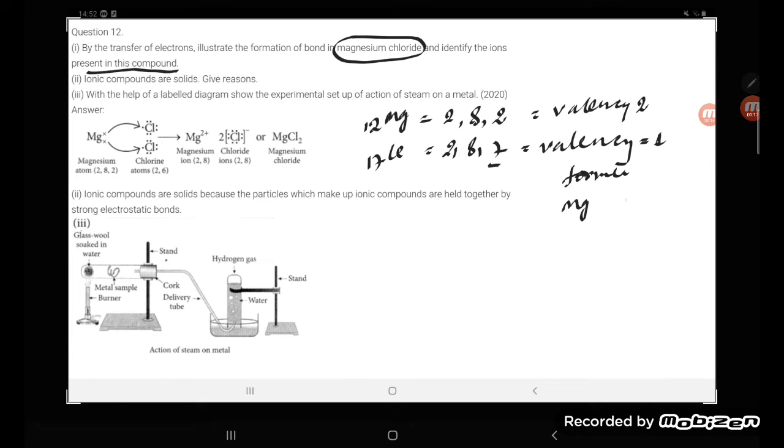that is magnesium and here is Cl. Magnesium valency 2 and Cl valency 1. You can cross multiply, so what is going to come? MgCl2. Now see, magnesium has 2 electrons and